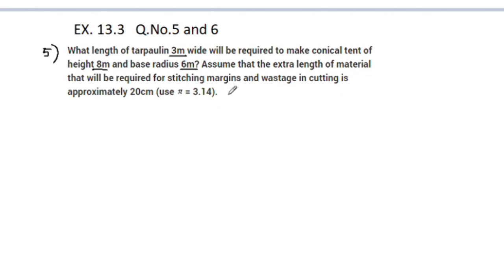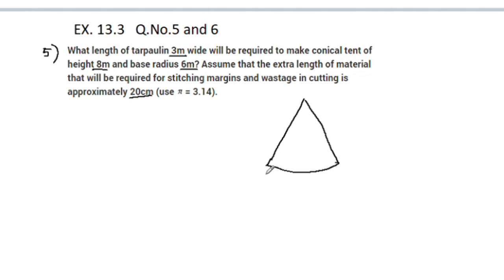We have to find the height of the conical tent. The radius of the conical tent is 6 meters, and the height is 8 meters.